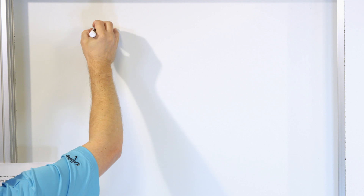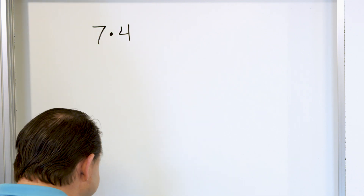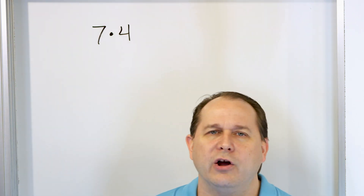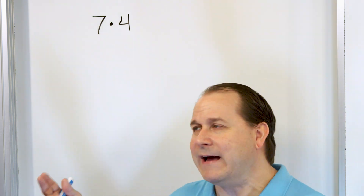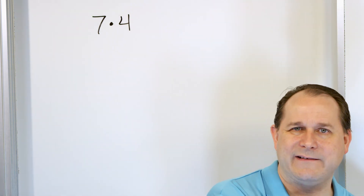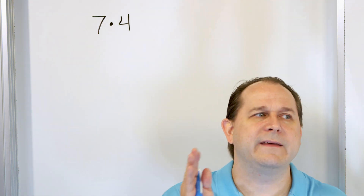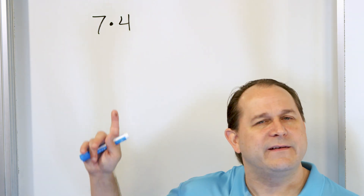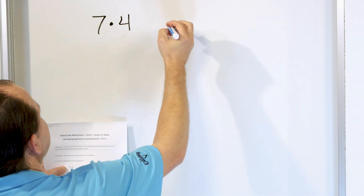Let's say that I tell you seven times four. Is this an equation or is this an expression? All you have to ask yourself is, does it have an equal sign? Well, I don't see any equal sign. You might say yes, seven times four is going to equal 28 — you know that in your mind — but there is no equal sign on the board. There is no left-hand side and right-hand side of an equal sign. So it's not an equation. This is just a calculation; we call it an expression in math. There's no equal sign, so this is an expression.